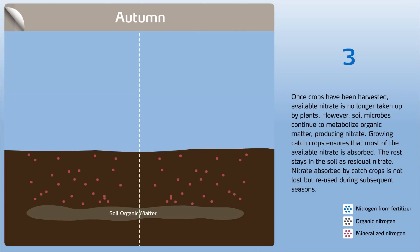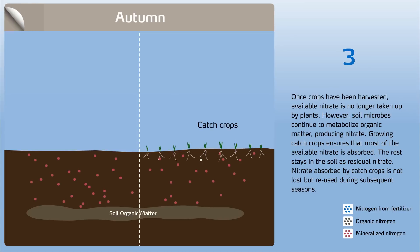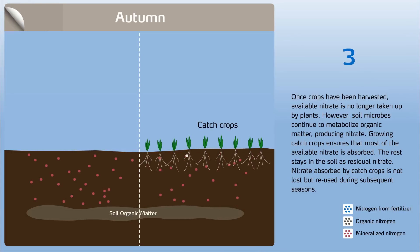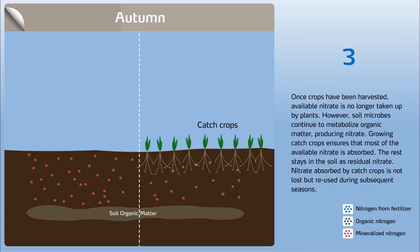Autumn. Once crops have been harvested, available nitrate is no longer taken up by plants. However, soil microbes continue to metabolize organic matter, producing nitrate. Growing catch crops ensures that most of the available nitrate is absorbed. The rest stays in the soil as residual nitrate. Nitrate absorbed by catch crops is not lost but reused during subsequent seasons.